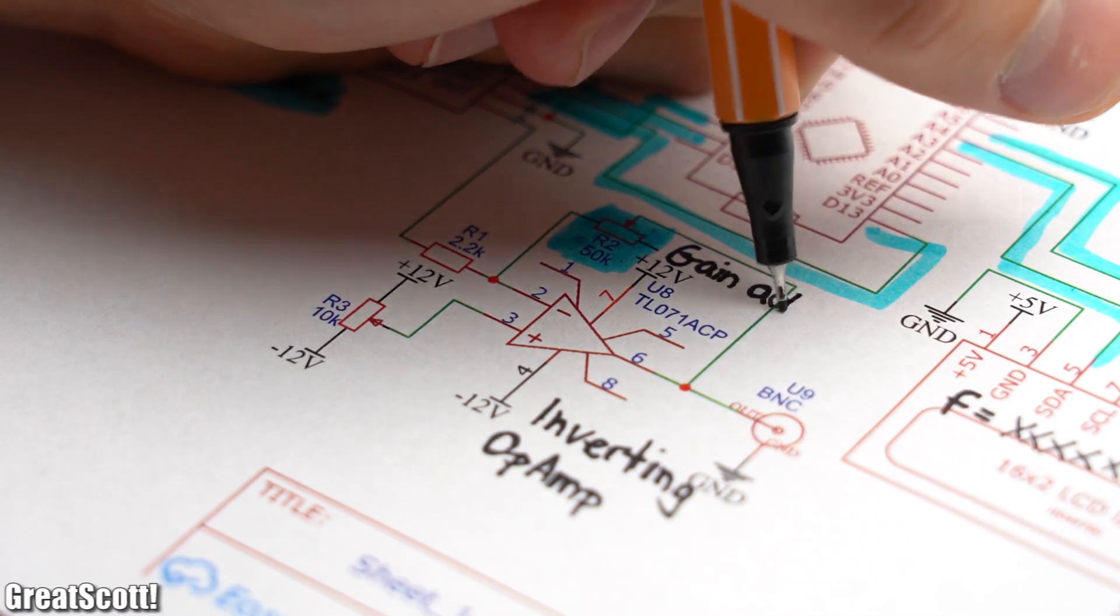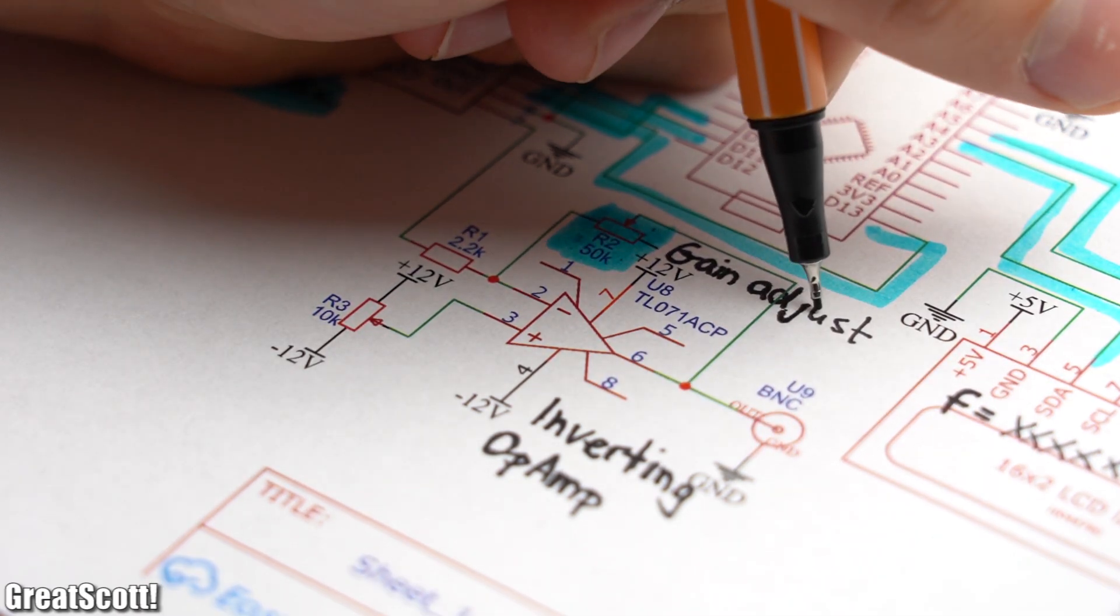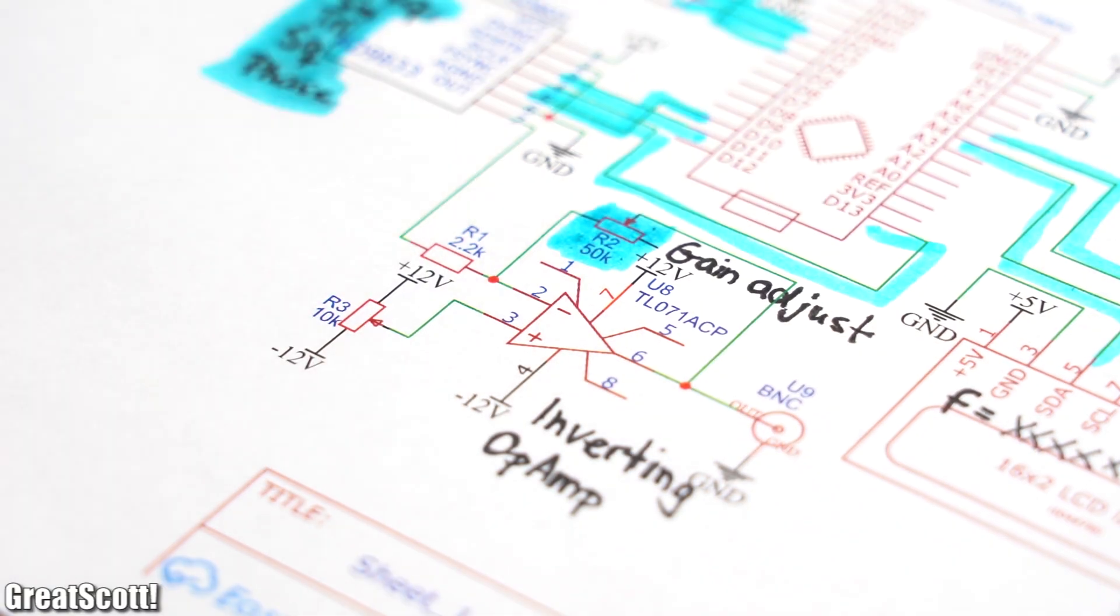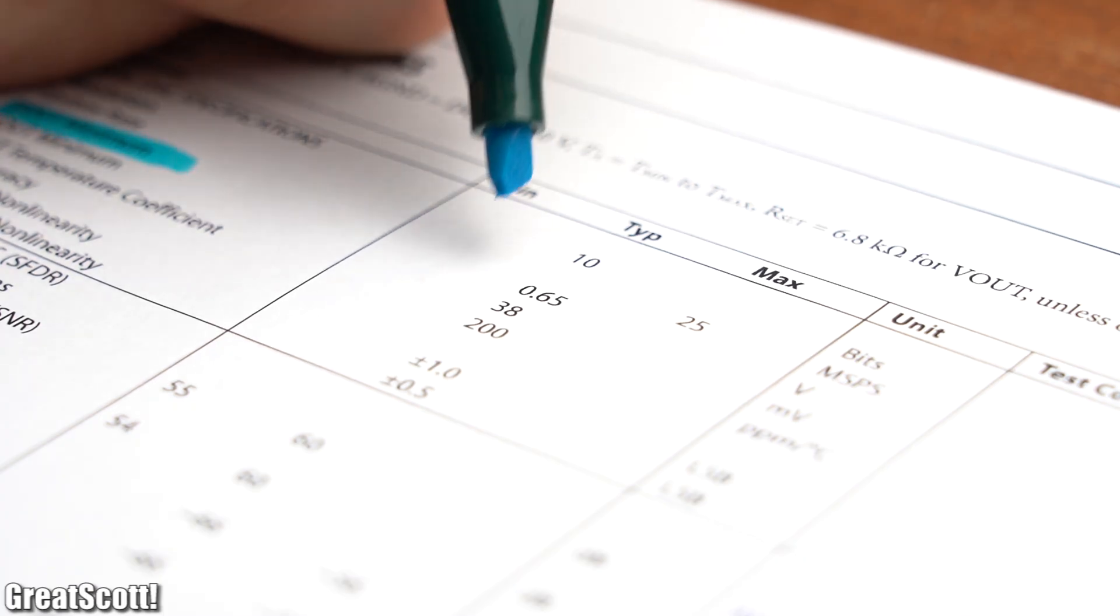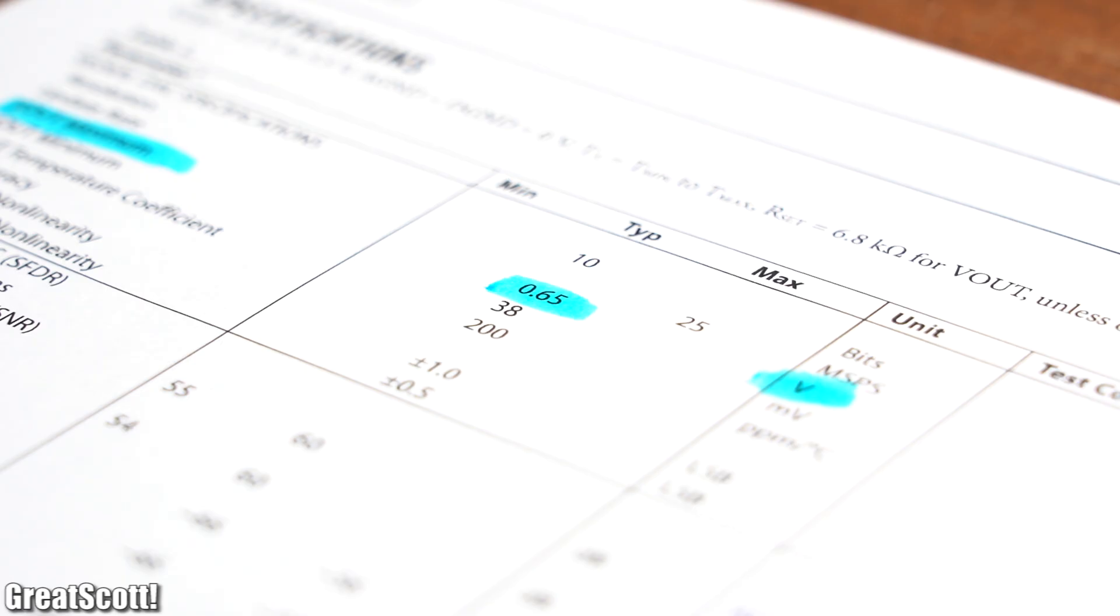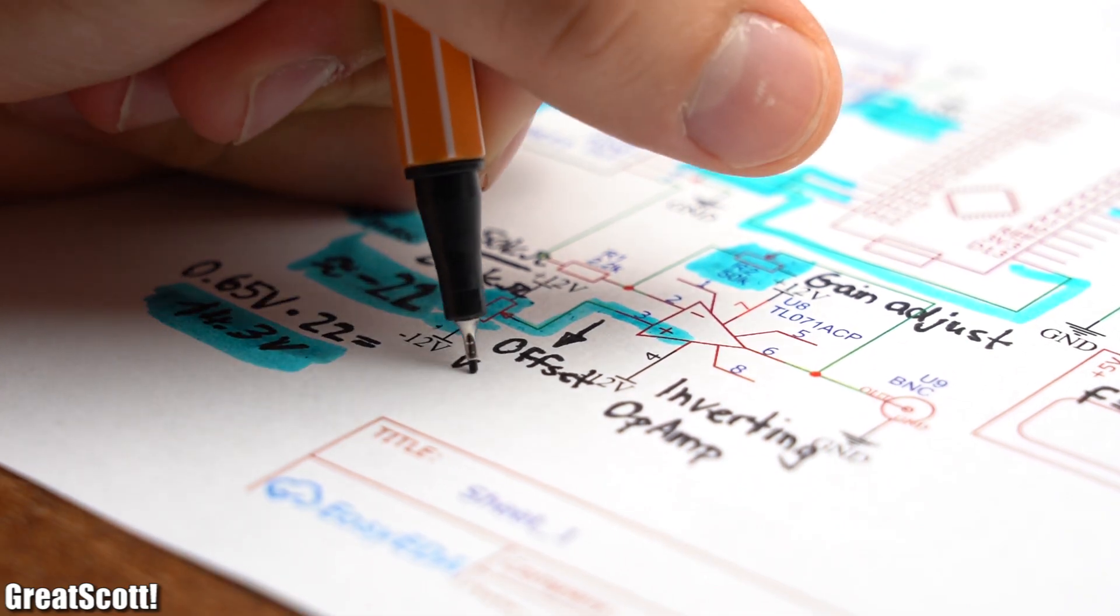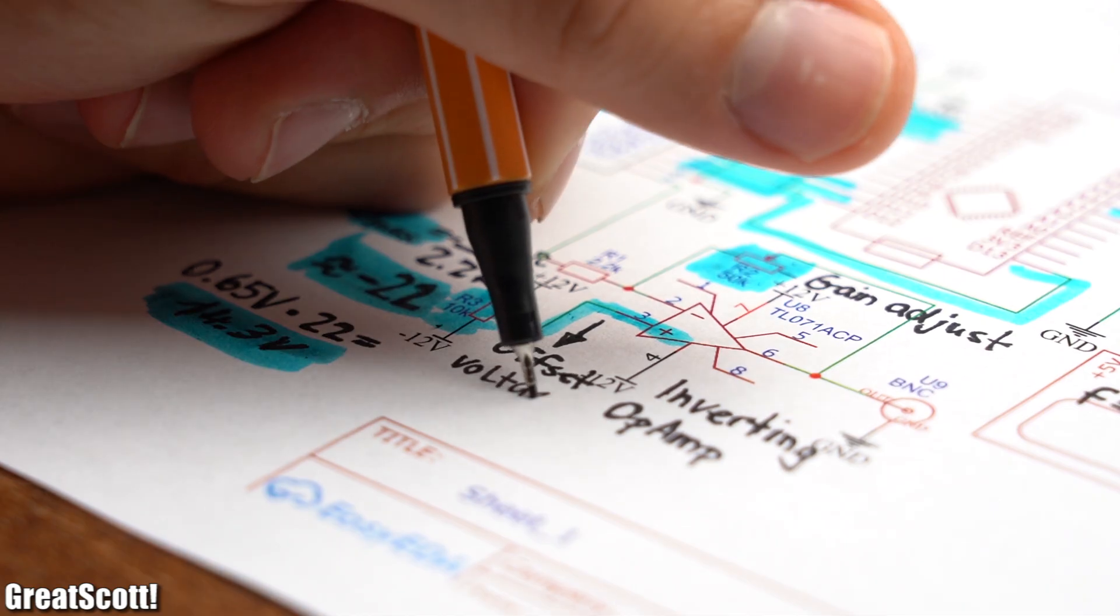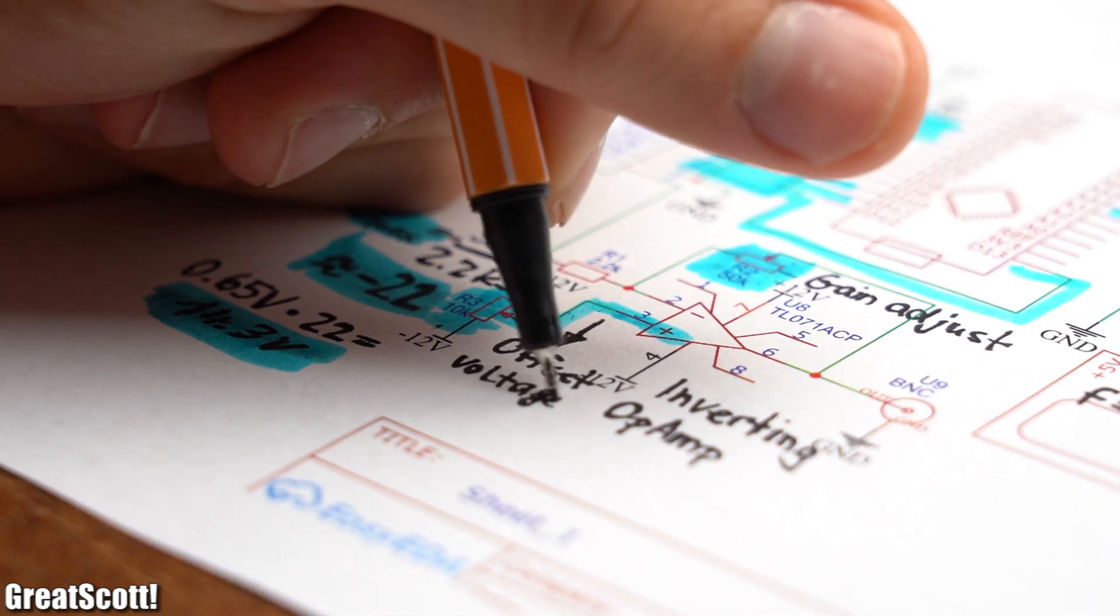And finally, like already mentioned, we also got an inverting op-amp circuits with an adjustable gain through a potentiometer of around 22, which should be enough to boost the DDS IC maximum output voltage of 0.65 volts up to 12 volts. By the way, the second potentiometer connected to the non-inverting inputs is used to generate the offset for the amplified waveform.